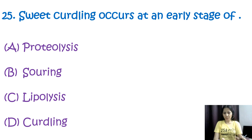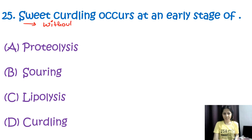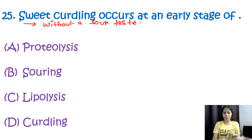Question number twenty-five: sweet curdling occurs at an early stage of — options are proteolysis, souring, lipolysis, or curdling. Sweet curdling refers to the separation of curds from milk without a sour taste. This occurs during the initial stage of proteolysis when milk proteins such as casein undergo enzymatic hydrolysis.